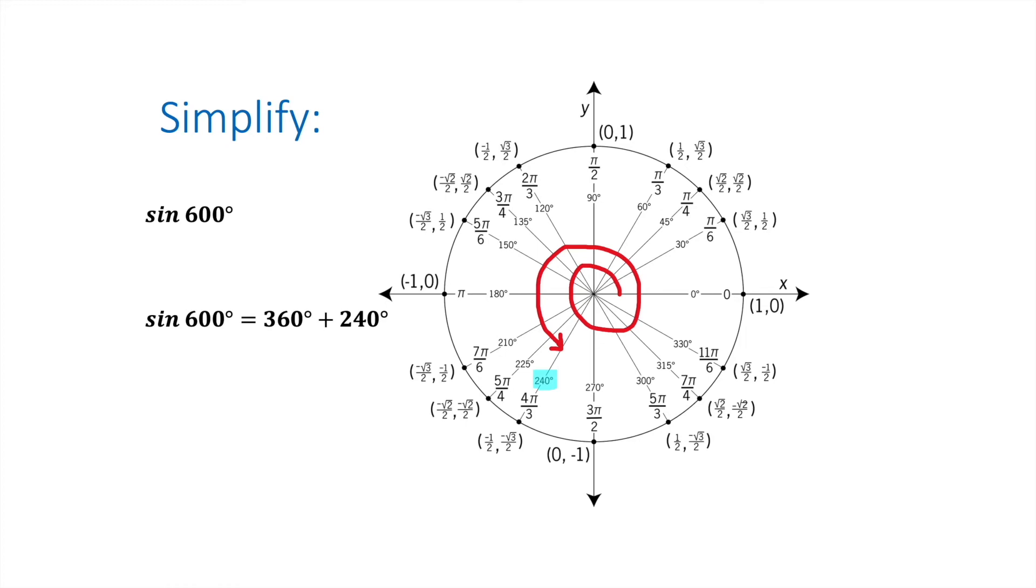And if we simplify, remember that sine is all of our y values. So I go out right here at this 240, and I go down here. My x value is negative 1 half. My y value is negative square root of 3 over 2.